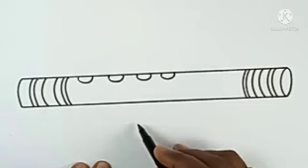After that, start drawing four small circles at the edge of the upper slanting line.